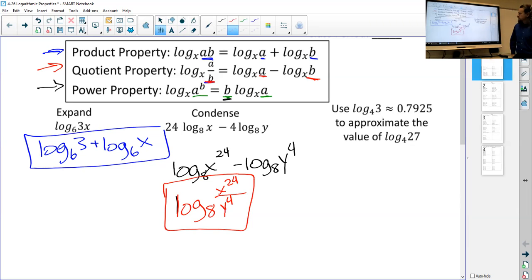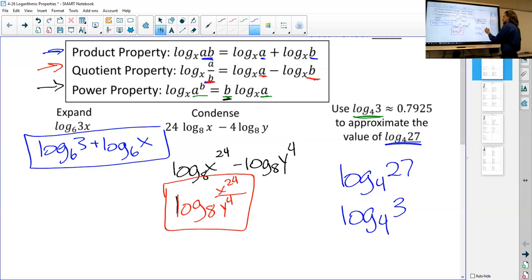All right. Our third example, use log base four of three is approximately 0.7925 to approximate the value of log base four of 27. So here's our third case. We want to actually want to solve this, but we don't want to have to use a calculator. So if it tells you the value of log base four of three, that means we want to rewrite this down here so that it looks like log base four of three. So I'm saying copy this down, log base four of 27. So look at 27. I think, how can I get that to be just a three? And we think back to the exponents and you remember, oh yeah, 27 is three to the third power. Three times three times three is 27.